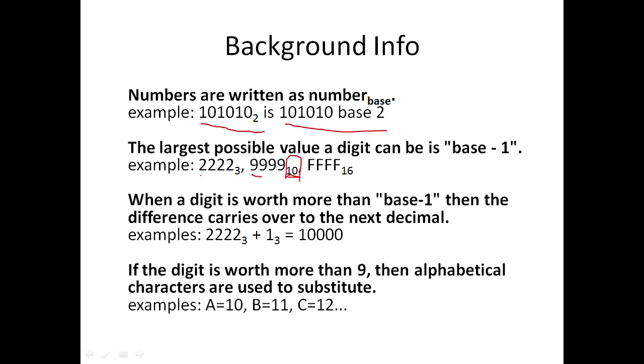For instance, base 3 could have 2222 as one of the largest possible numbers, where 2 is the maximum digit for that base.